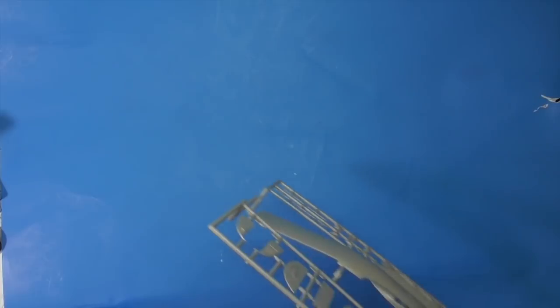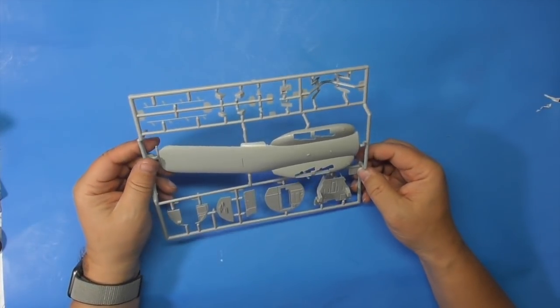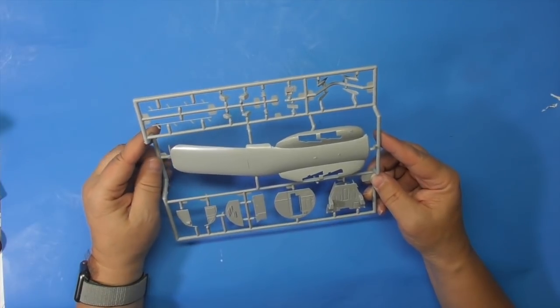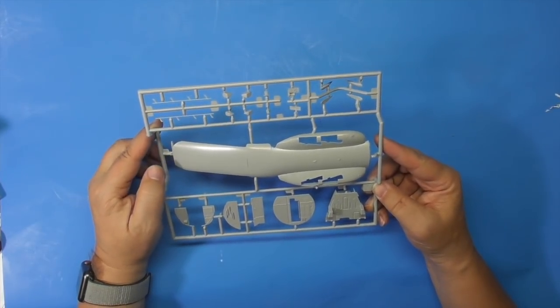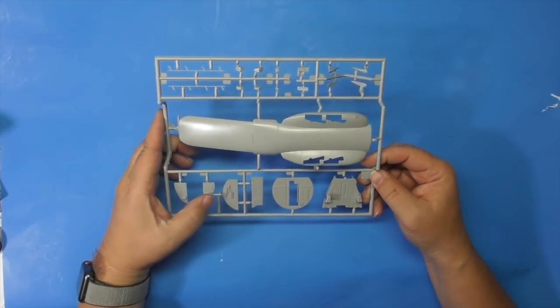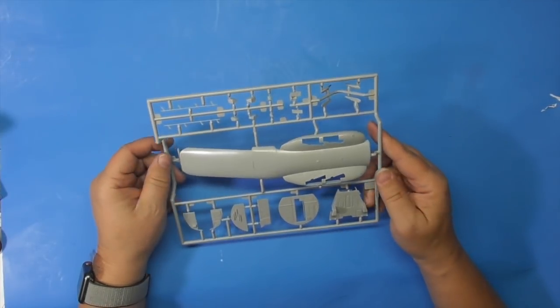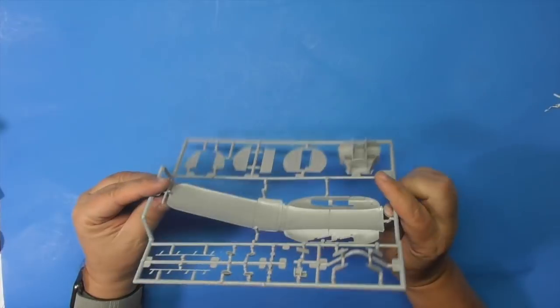Next bag has two sprues in it. First one's got the bottom, which this part broke, probably when I took it out of the bag. Bulkheads have some nice detail. I think this is the cockpit floor with no detail in there.